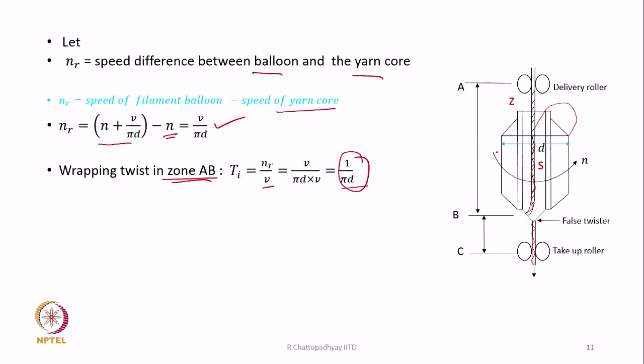The wrapping twist in zone AB is going to be 1 upon πD. There will be little twist because the yarn is also rotating in the same direction and the balloon is also rotating in the same direction. They are both rotating in the same direction and the additional speed of the balloon is just 1 upon πD. So that will be the wrapping twist in the zone, or you can say the wrapping rotation in this case.